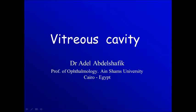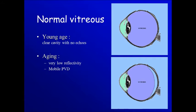In this second part, I'm going to cover the vitreous cavity. Normally in young age, the vitreous cavity is clear with no echoes. While getting older, there is normally a low reflectability in the vitreous, and sometimes we have a posterior vitreous detachment which is mobile.